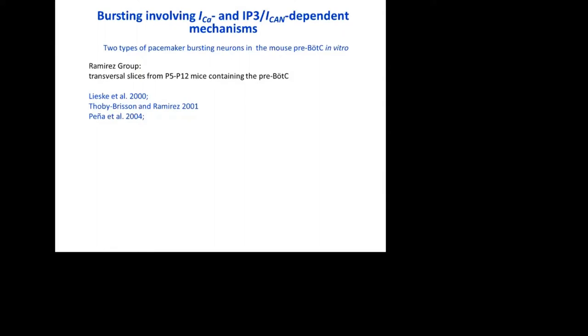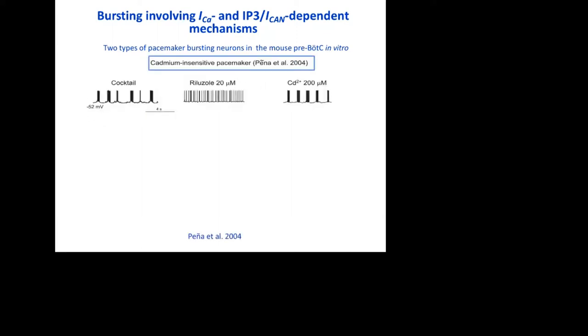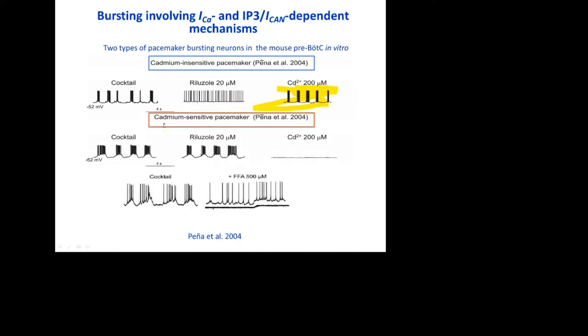This is not the end of the story about cellular level of this system. In a similar prep but taken from another species, mouse, different types of bursters have been identified. The first type is the same riluzole-sensitive bursters as we just discussed. Interestingly, those cells were insensitive to cadmium, which is a blocker of calcium channels. The second type exhibited something opposite. The bursting did not depend on persistent sodium but could be abolished by cadmium.